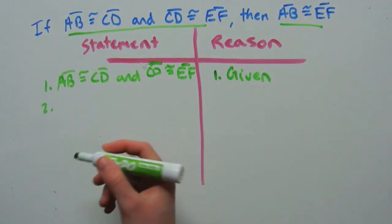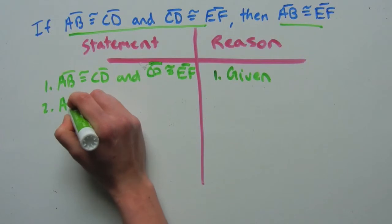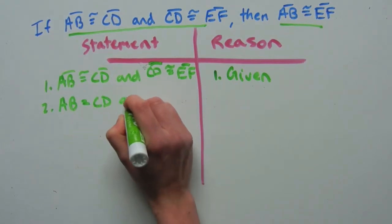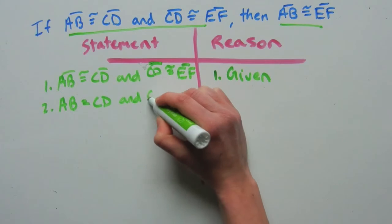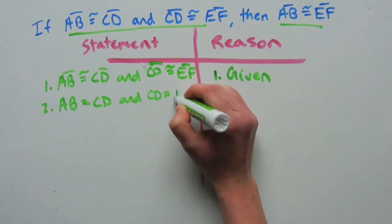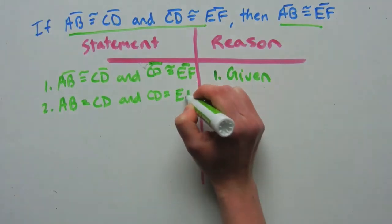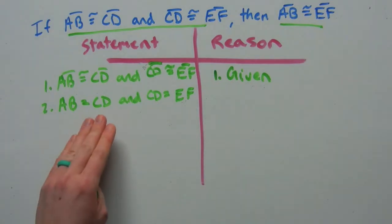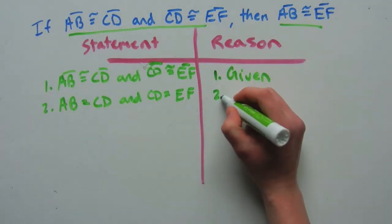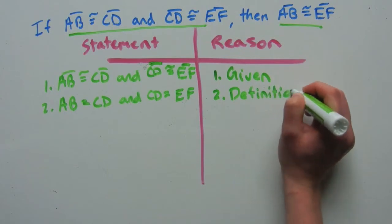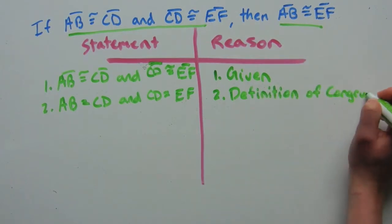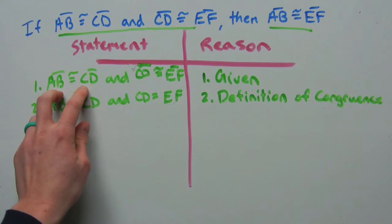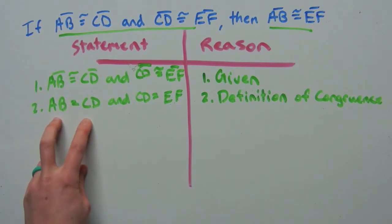Step two: we can say that AB equals CD and CD equals EF, and we can say that because of the definition of congruence — segments that are congruent are equal in measure.